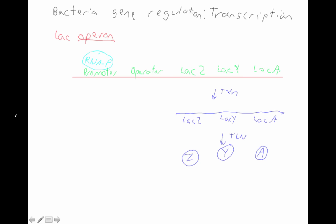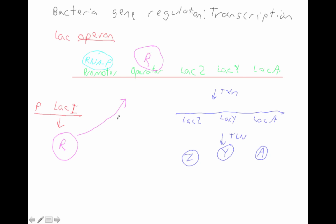The operator is the key to regulating this entire operon. There's another gene — lac I — which is not part of the operon; it has its own promoter and makes a repressor. The repressor binds to the operator. As its name suggests, it represses transcription. As long as the repressor is bound to the operator, the RNA polymerase may be bound to the promoter but it gets blocked — it can't get past the repressor. It serves as a roadblock: the RNAP just hits it and bounces off.